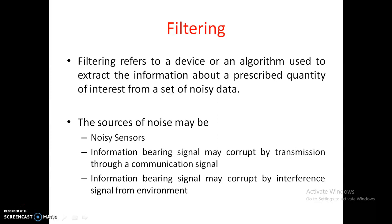The third source of noise is that the information-bearing signal may be corrupted by interference with other signals in the environment. If frequencies are matching, interference may occur. Based on these three things, our information will be polluted — we unknowingly take extra information that is not of our interest, which is why filtering is required.